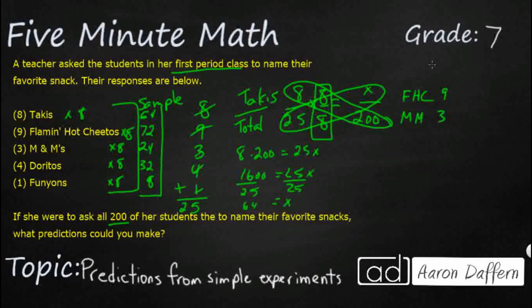So you notice that this Flamin' Hot Cheetos is three times larger, right? That's going to equal three times our M&Ms. So we could probably say that if we were going to get all 200, that our Flamin' Hot Cheetos is going to equal three times whatever that M&M is. So we can look for that pattern.